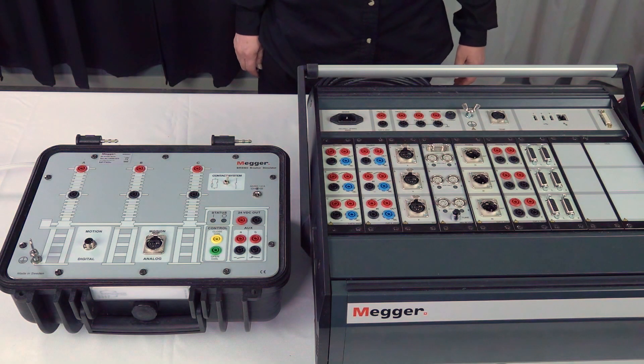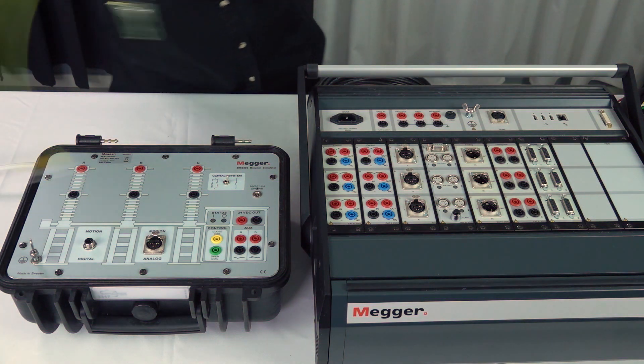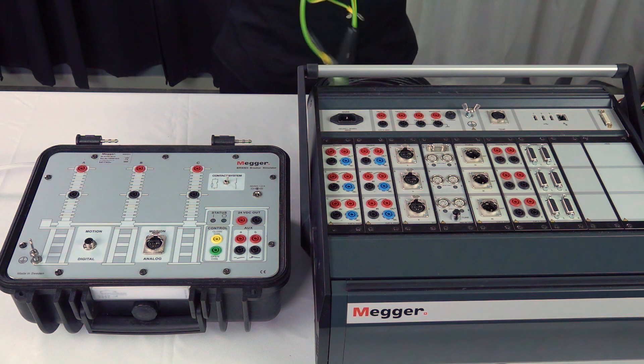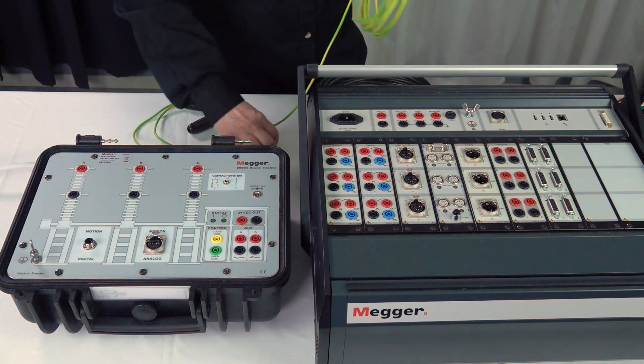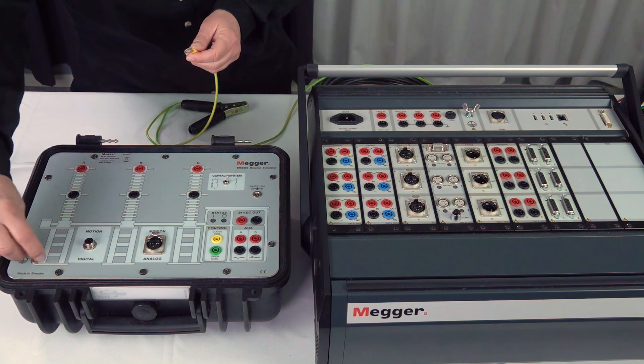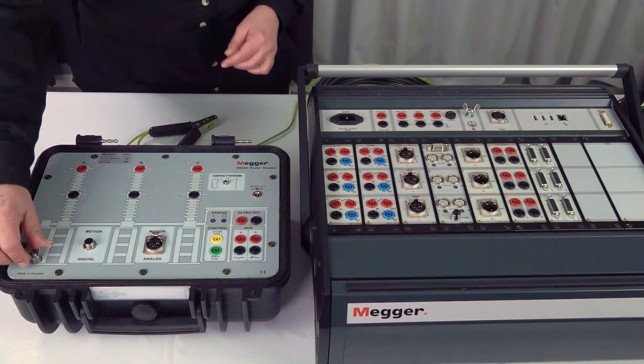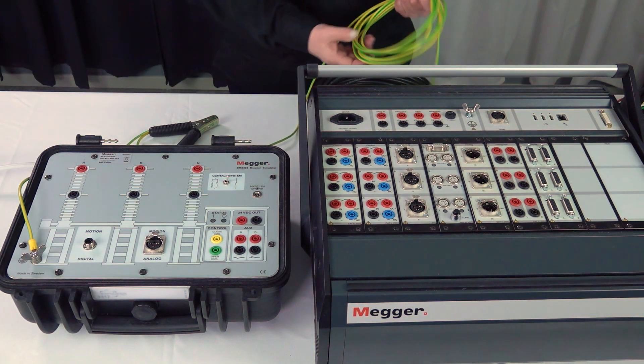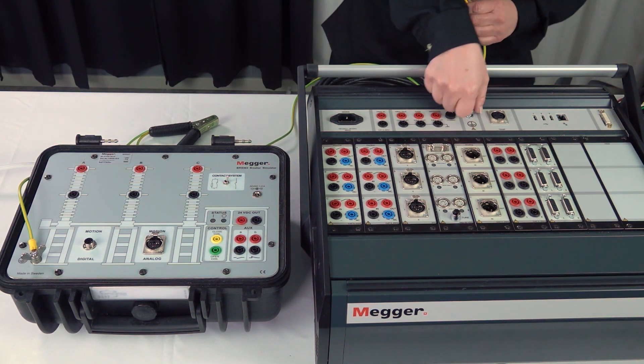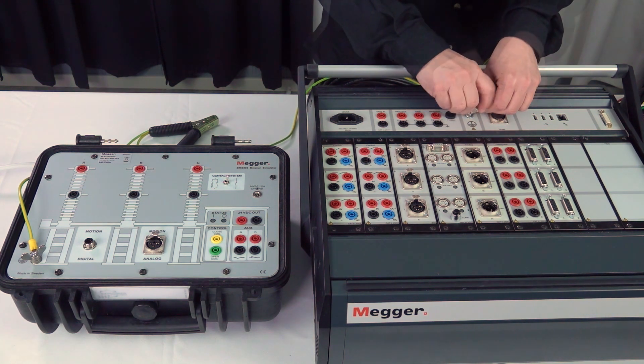We start with the connections. The first thing we want to do is to connect the grounding cable. We start with connecting in the breaker, in this case the simulator. This is of course much more important in the station where you have capacity coupling and other disturbances but do these connections also for a demo.